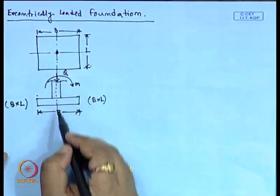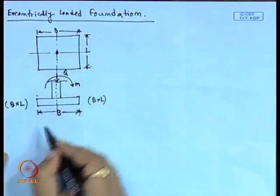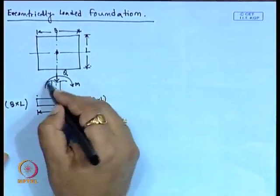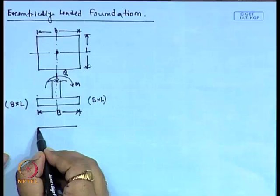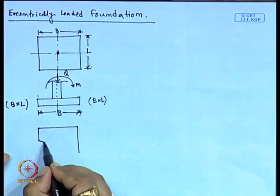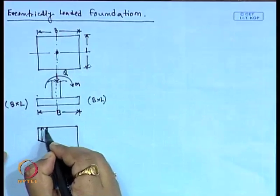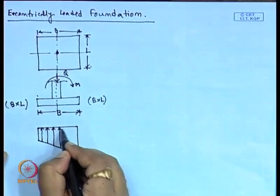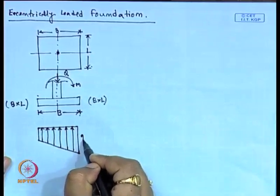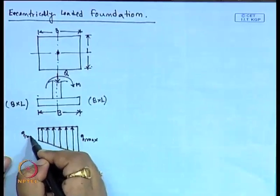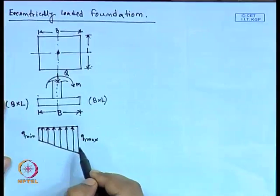Under central loading with no moment, uniform distribution of loading is observed below the footing. If a moment is applied, the load distribution below the footing will follow a trapezoidal pattern — the soil reaction gives a maximum value q_max on one side and a minimum value q_min on the other side.